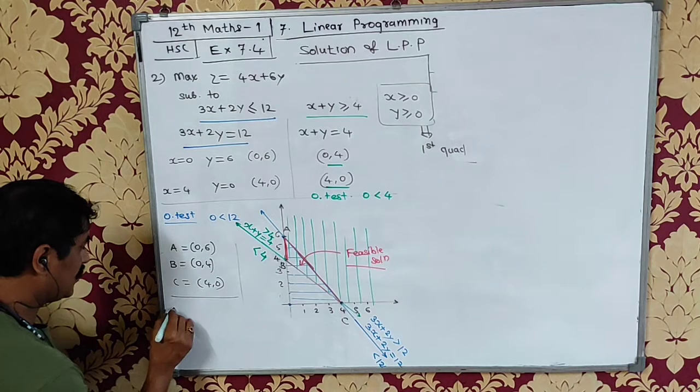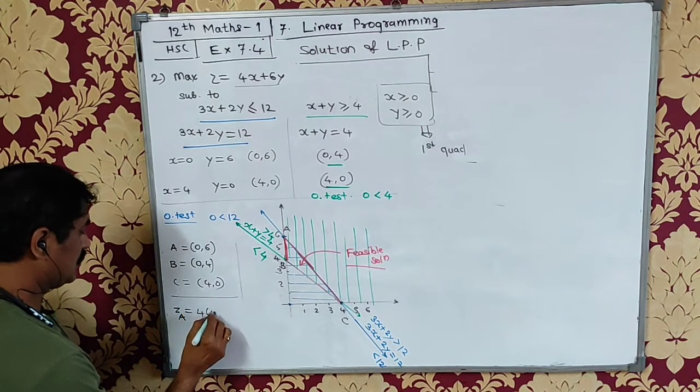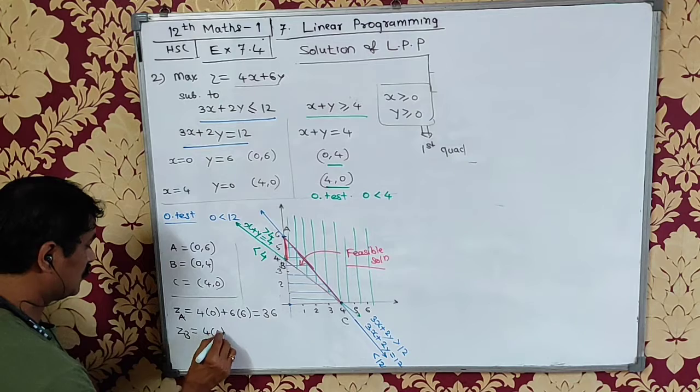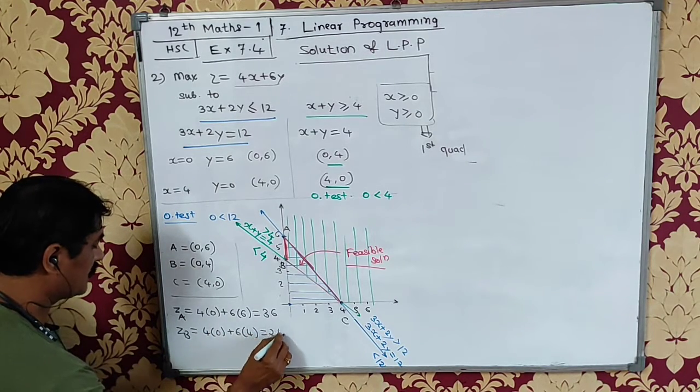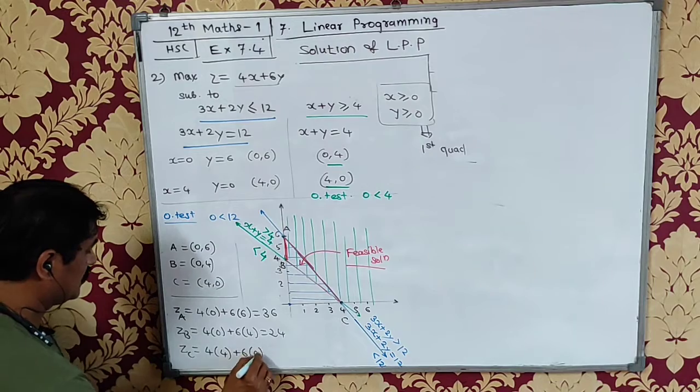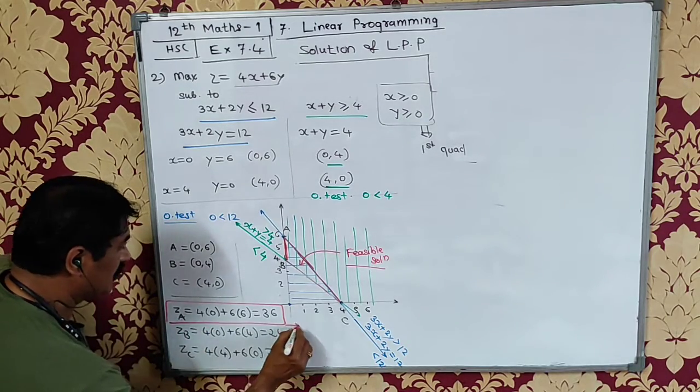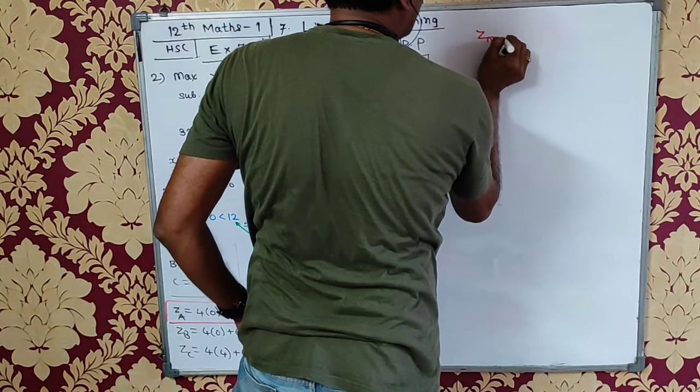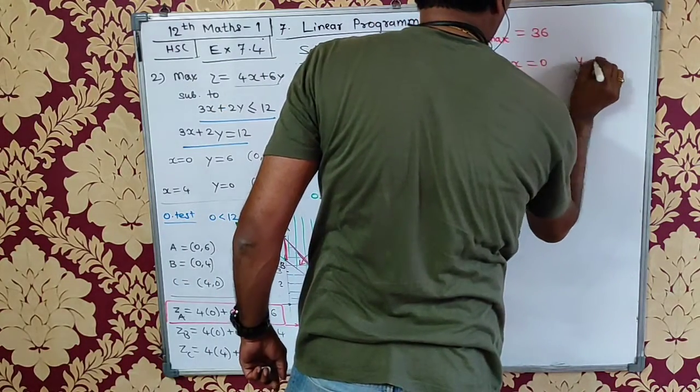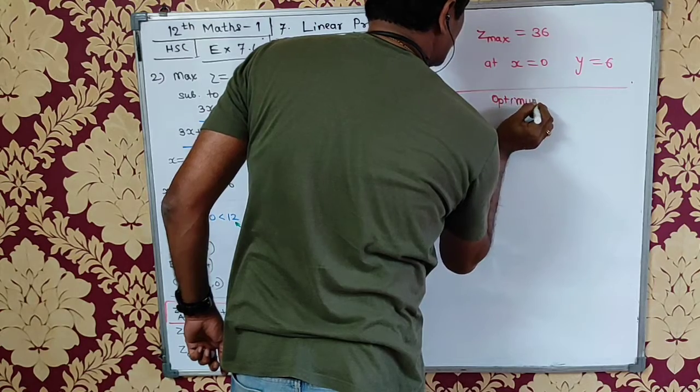We will find the value of Z. Z is 4x plus 6y. Then we will substitute A, so it will be 4 times 0 plus 6 times 6, that will be 36. Z at B will be 4 times 0 plus 6 times 4, that is 24. And Z at C will be 4 times 4 plus 6 times 0, which is 16. So Z max equals 36 at x equals 0 and y equals 6. This is our optimum solution.